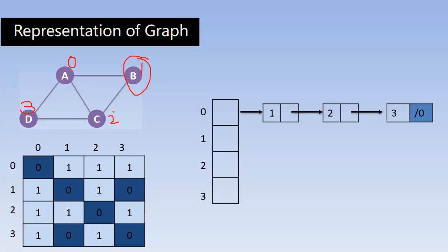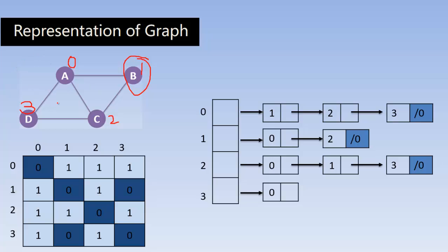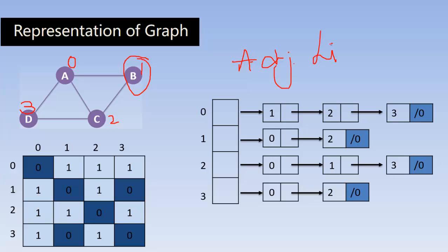When we consider node 1, meaning node B, there is an edge between A and B and between C and B, so node 1 is connected to 0 and 2. The pointer field of the last node contains null because there is no further node. Node 2 is connected to node 0, node 1, and node 3. Node 3 contains null inside its pointer field and is connected to node 0 and node 1. This is called the adjacency list representation.